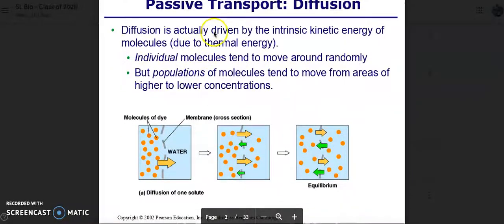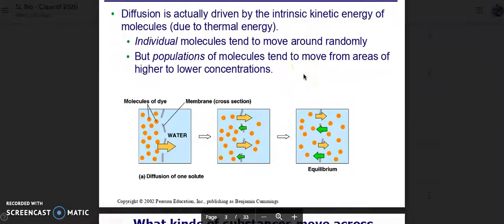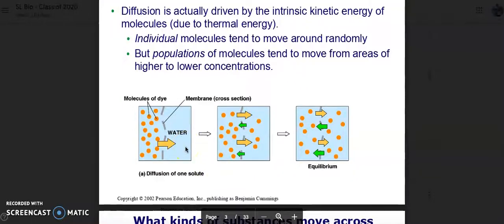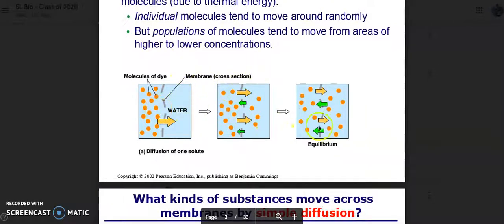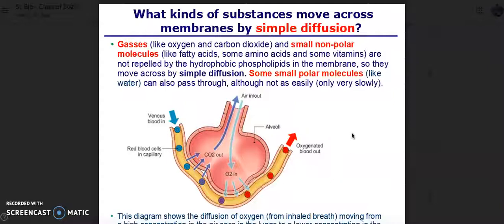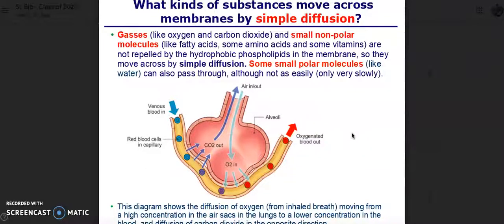Passive transport. Diffusion is actually driven by the intrinsic kinetic energy of molecules due to thermal energy. Individual molecules tend to move around randomly, but populations of molecules tend to move from areas of higher to lower concentrations. What kinds of substances move across membranes by simple diffusion? Gases like oxygen and carbon dioxide and small non-polar molecules like fatty acids, some amino acids, and some vitamins are not repelled by the hydrophobic phospholipids in the membrane, so they move across by simple diffusion.